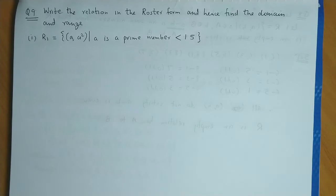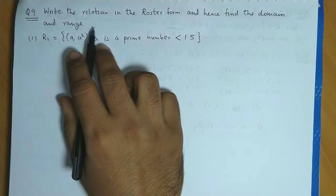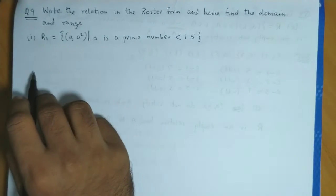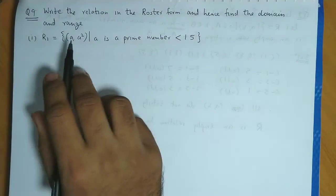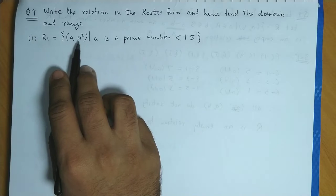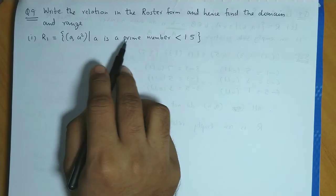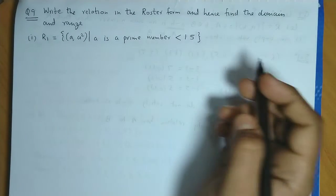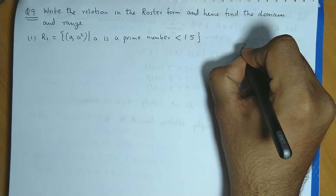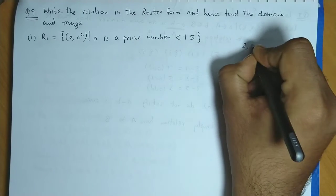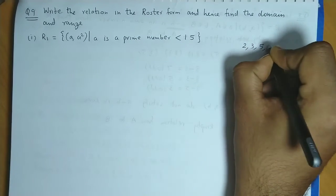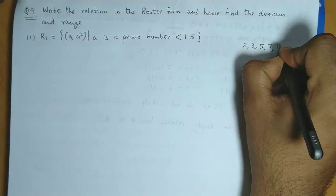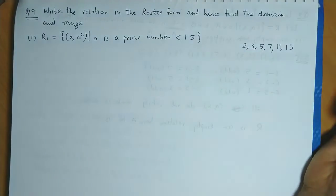Now question 9. Write the relation in the roster form and hence find the domain and range. The relation is ordered pairs (a, a²) where a is a prime number less than 15. The prime numbers less than 15 are 2, 3, 5, 7, 11, and 13.